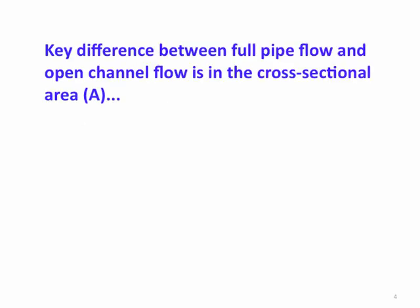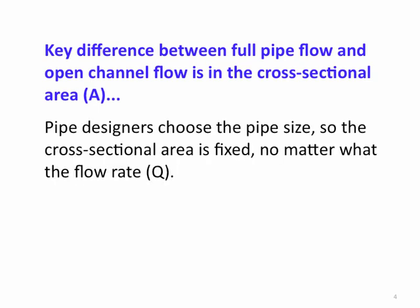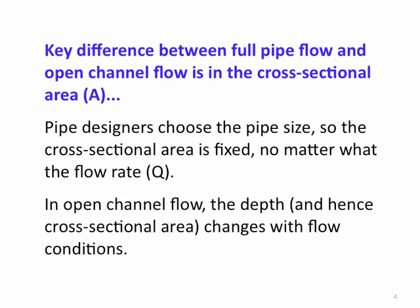The key difference between full pipe flow and open channel flow is in our cross-sectional area. With a pipe, we know the cross-sectional area — no matter what the flow rate, the area stays the same. But in open channel flow, the depth, and therefore the cross-sectional area, will change with the flow conditions.